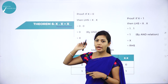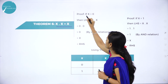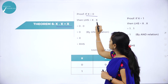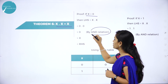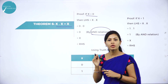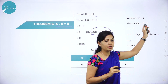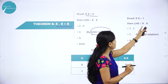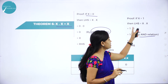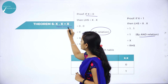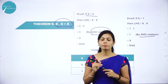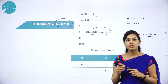Next theorem is x dot x is equal to x. If x is equal to 0, then 0 dot 0 is equal to 0 by AND relation; 0 means x. If x is equal to 1, then 1 dot 1 is equal to 1 by AND relation; 1 means x. So the sixth theorem is x dot x is equal to x. In today's session, I have explained only 6 Boolean theorems but still you have many more theorems to study. In the next session, I will discuss other Boolean theorems. Thank you.